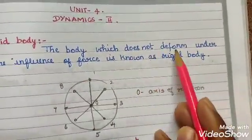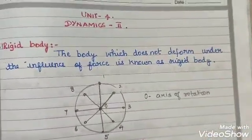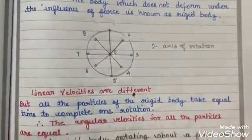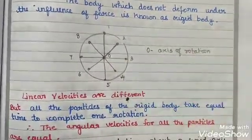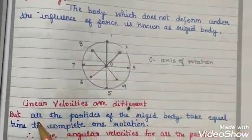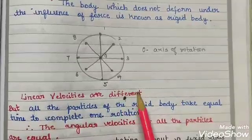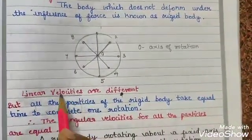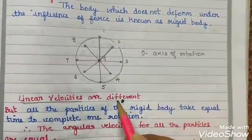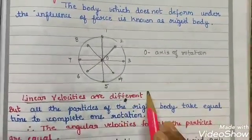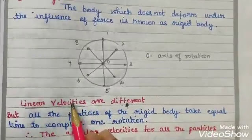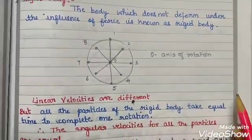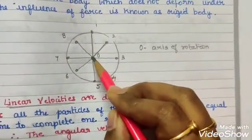A rigid body does not deform under the influence of a force. For a rigid body, linear velocities of different particles are different, but the angular velocity is the same for all particles. So: linear velocity is different, angular velocity is the same.